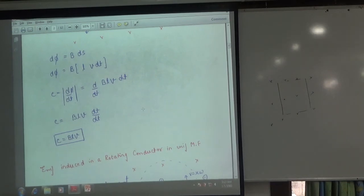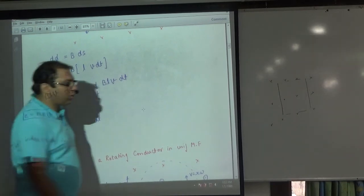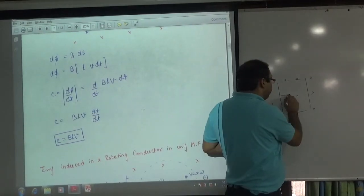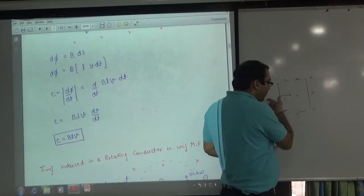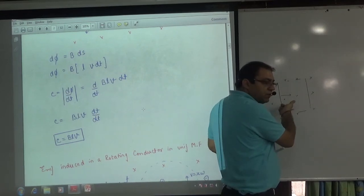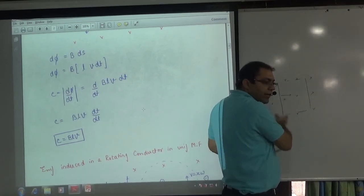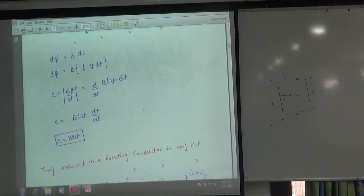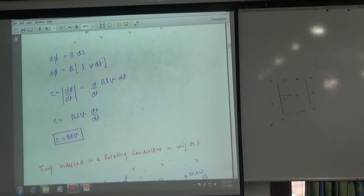So how does Fleming's direction get the induced current? If the rod is moving right, then B is in the board. The rod's velocity is right. So B means conductor is right. Where will the current go? It will come up.